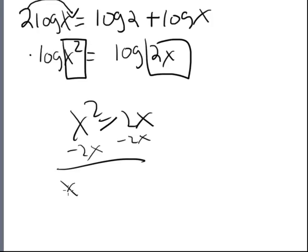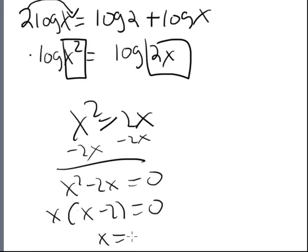Just bring it, you know, subtract 2x from both sides here. And we have x squared minus 2x equals zero, and you can factor this into x times x minus 2 equals zero. So x equals zero or two.